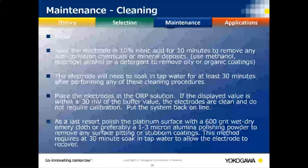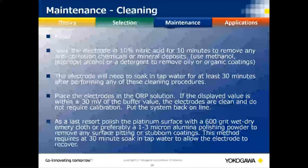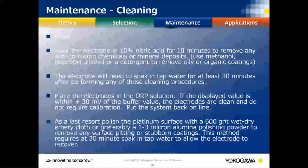Just as with pH — if you're within 0.03 pH you don't need to recalibrate — with ORP, it's honestly only accurate within plus or minus 30 millivolts. If you're within that range, you can put it back without calibrating, unless your SOP requires it.